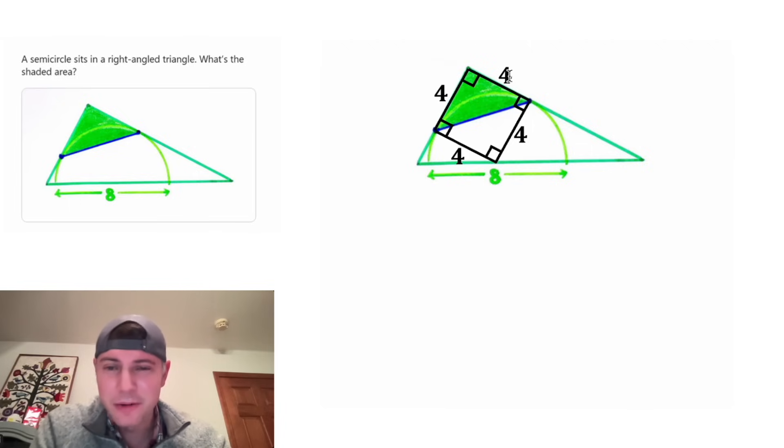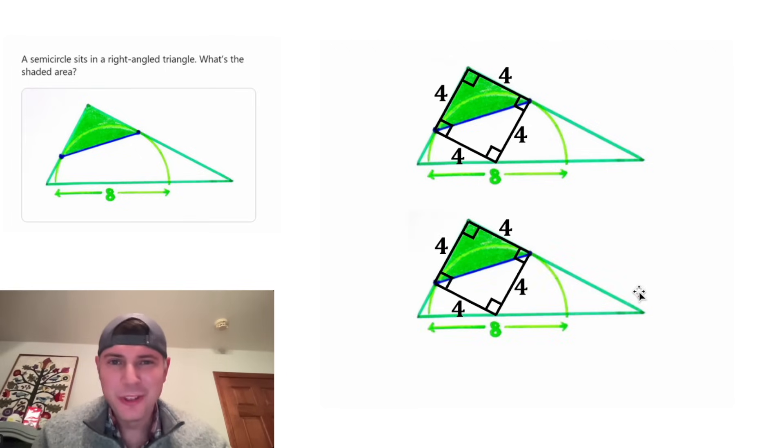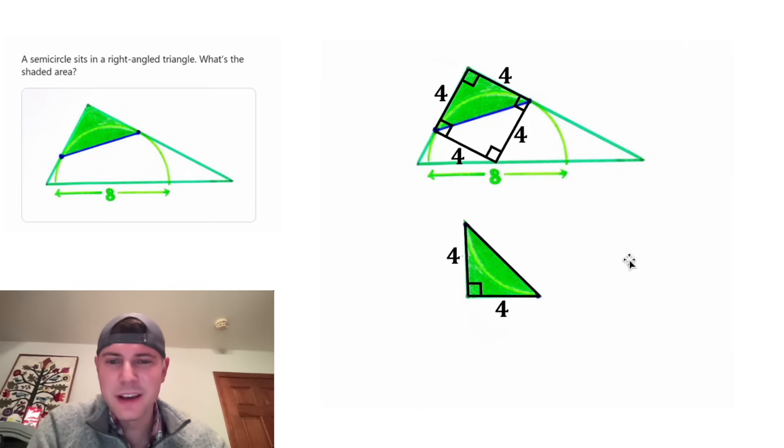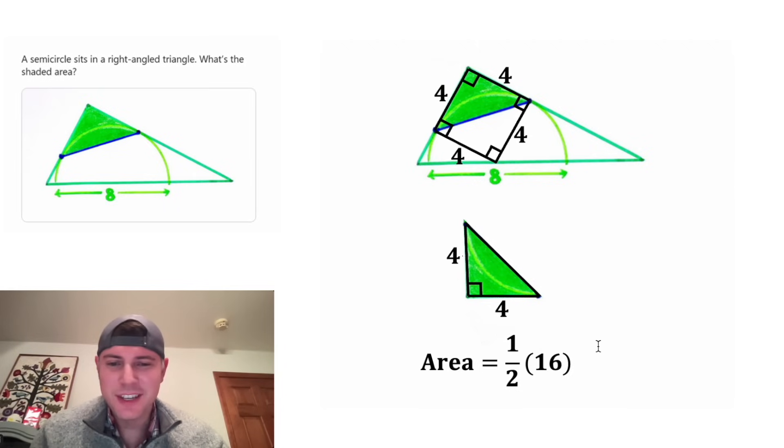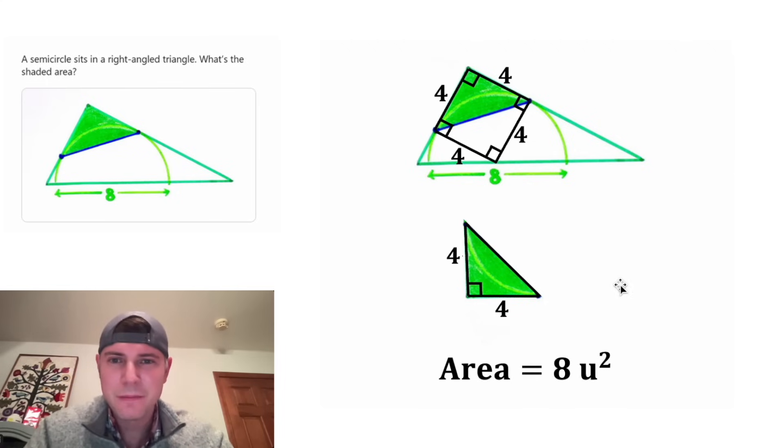This triangle is the area we're trying to find. Let's copy the whole thing down and isolate this triangle. We can rotate it like this and find the area using the formula: one-half base times height. The base is 4 and the height is 4. 4 times 4 is 16 and half of 16 is 8. Let's label it units squared—that's the answer. The area of this triangle is 8 units squared.